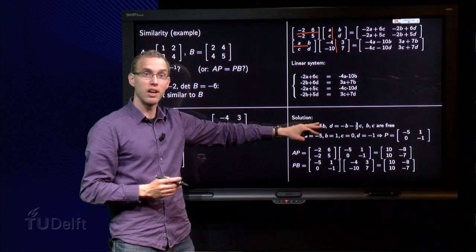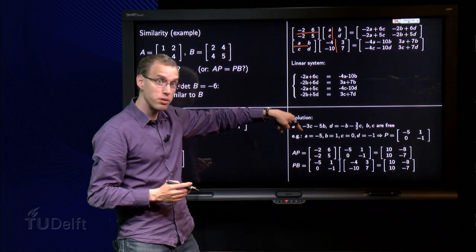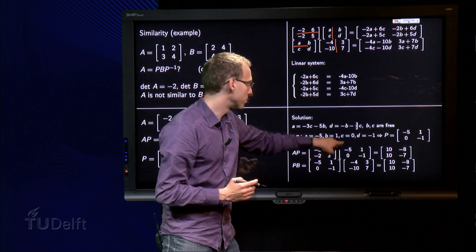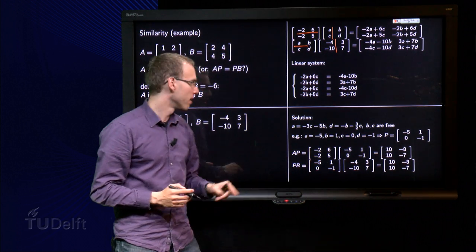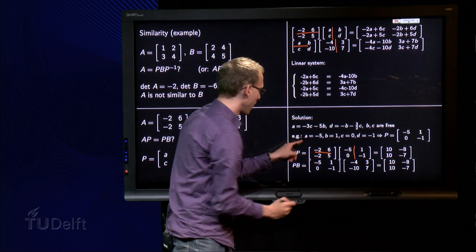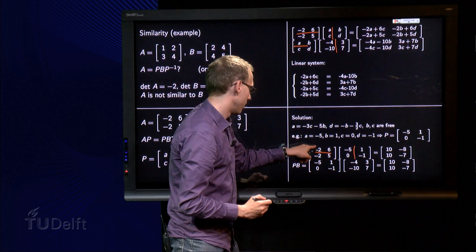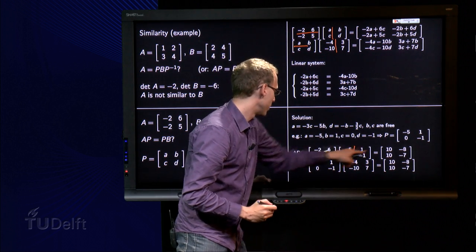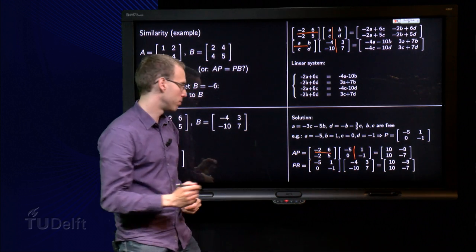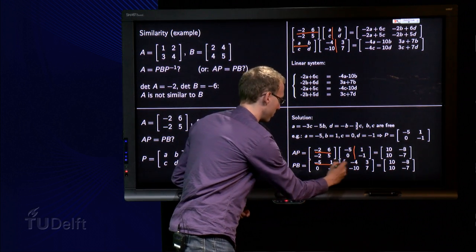This is a very long calculation, and we skipped some steps over here, so it is good to check afterwards, so compute A times P and P times B. Let's do this one. And we get a ten, a ten, here a minus two, minus six, minus eight, minus two, minus five, minus seven, so A times P.